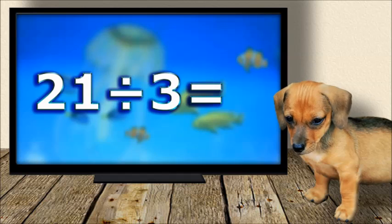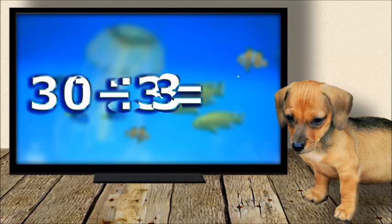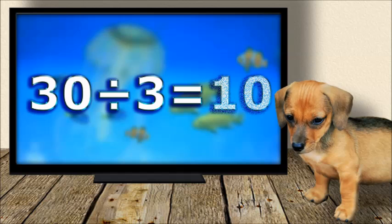Twenty-one divided by three equals seven. Thirty divided by three equals ten.